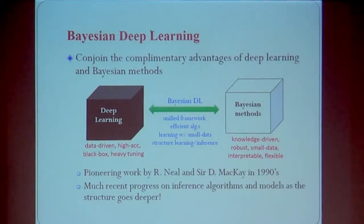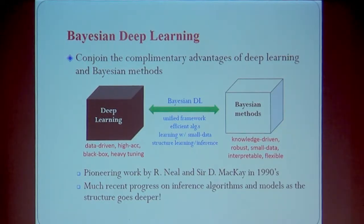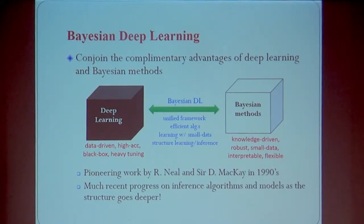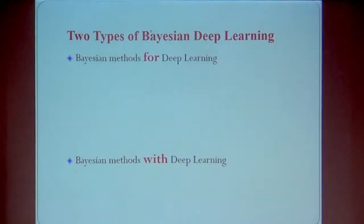This motivated us to consider a probabilistic way to do deep learning. This is what we call Bayesian deep learning. We combine deep learning and the Bayesian or probabilistic method in general. Deep learning is at one end of the spectrum and the Bayesian method is at the other end. It's a mathematical way to characterize the uncertainty and to do inference. This has been pioneered by Neal and MacKay in the last wave of neural networks, but recently there has been much progress.